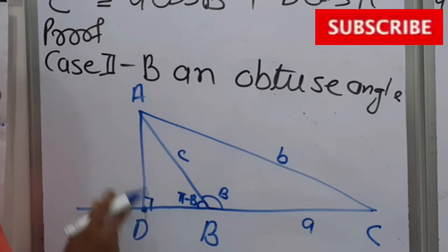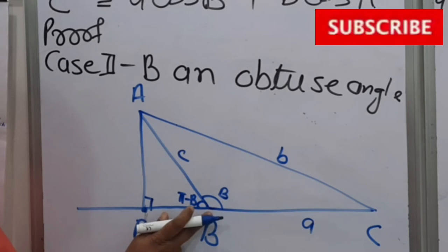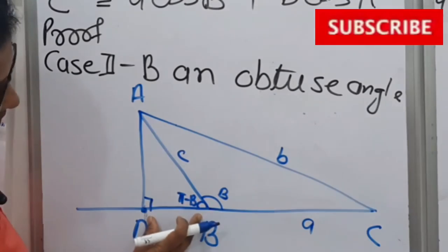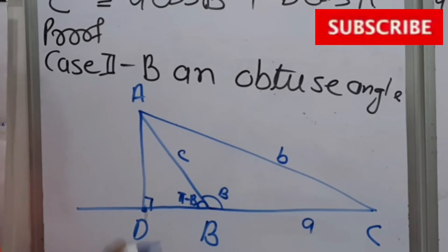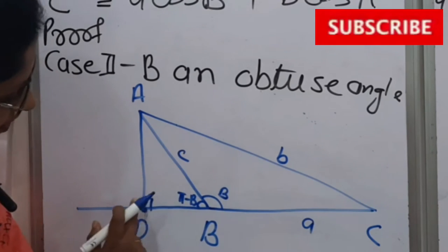This is acute angle. Here this side AB, and the projection of AB will be BD as per our definition of projection. And projection of AC is DC.